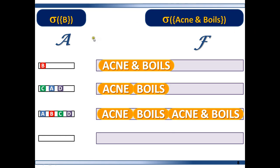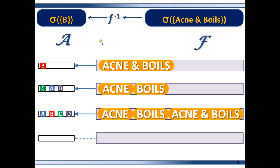Is F a measurable function? Let's see. F-inverse, the inverse set function, maps every element in F to one element in A. So yes, F is a measurable function. If you remember from class 1, for a function to be a function, every single element in the domain must map to one and only one element in the range — and that's what we have here. So F is a measurable function.